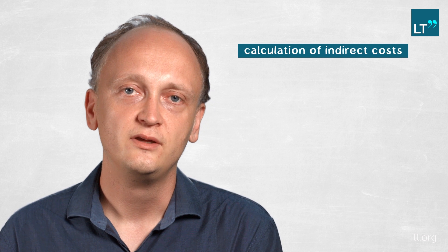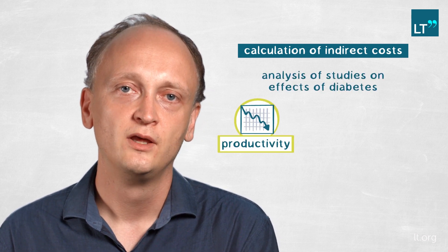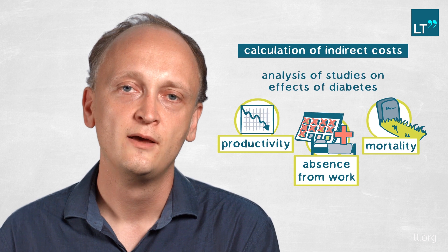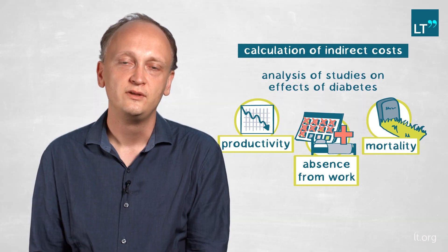For the indirect cost, the methodological approach was a systematic review. Our team investigated many studies that estimated the effect of diabetes on productivity, on missed days at work, on drop-out from the labour force, and also on mortality. Then, in a so-called meta-analysis, the effects of these different studies were put together as an aggregate effect. This was also done for different world regions, taking into account that the effect of diabetes on productivity in Germany will likely be very different from India or other low- and middle-income countries due to differences in quality of care.